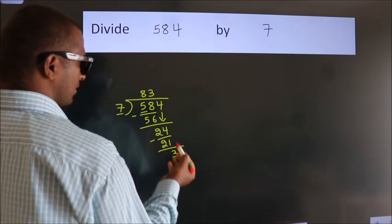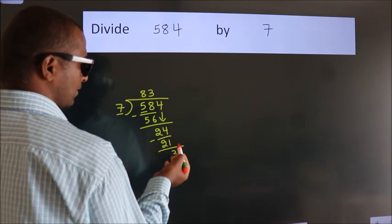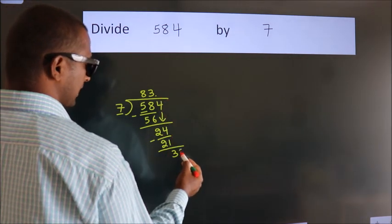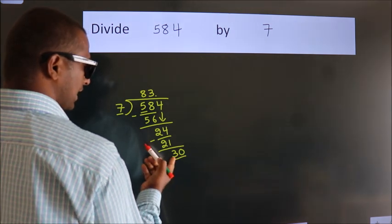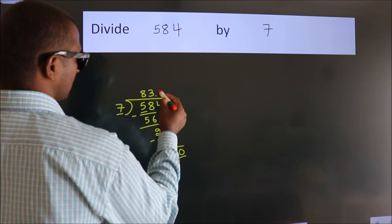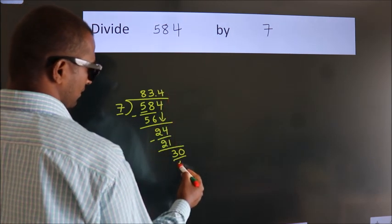After this, no more numbers to bring down. So what we do is put a dot and take 0. So 30. A number close to 30 in the 7 table is 7 threes, 28.